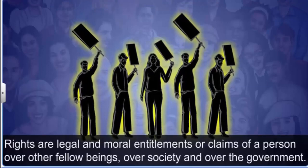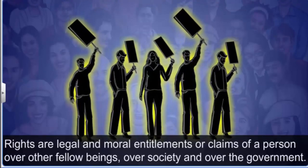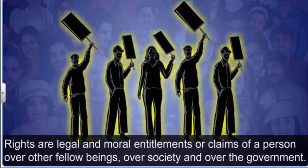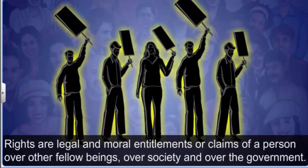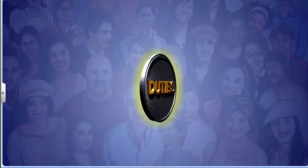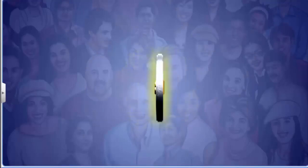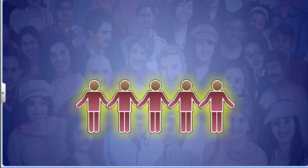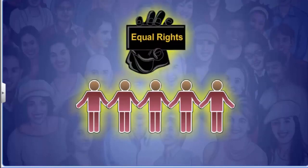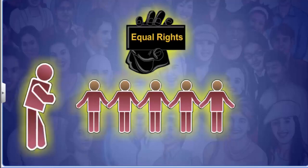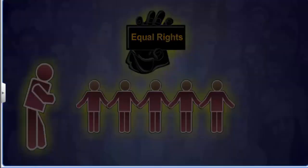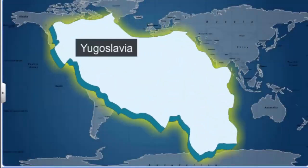Rights are legal and moral entitlements or claims of a person over other fellow beings, over society and over the government. Rights and duties are the two sides of the same coin. One cannot have a right that harms or hurts others, and this is possible only when one makes a claim that is equally possible for others. Thus, every right comes with an obligation to respect the rights of others. Therefore, it was not fair for the Serbs in Yugoslavia to drive out the Albanians and claim their right on the entire country.